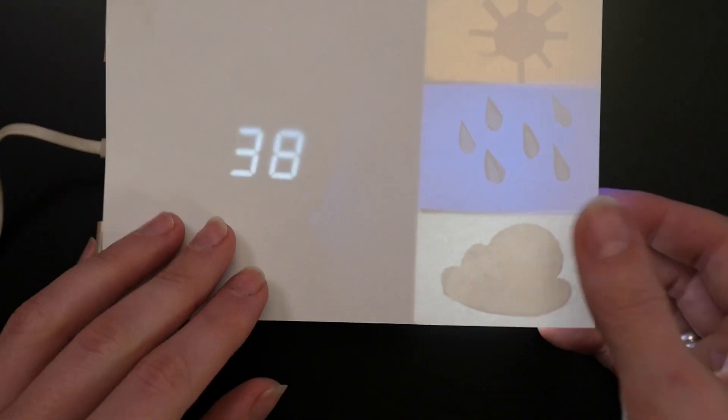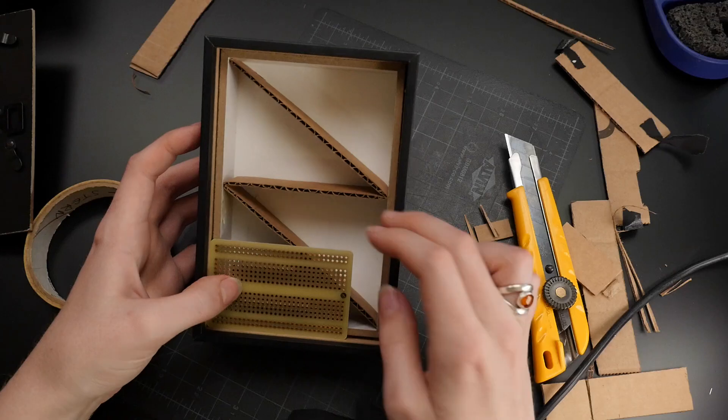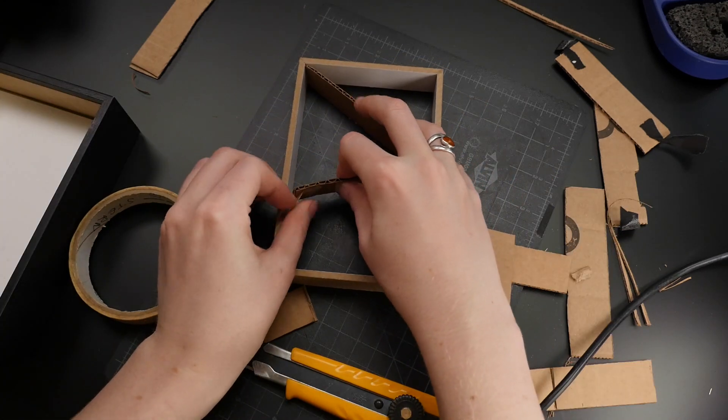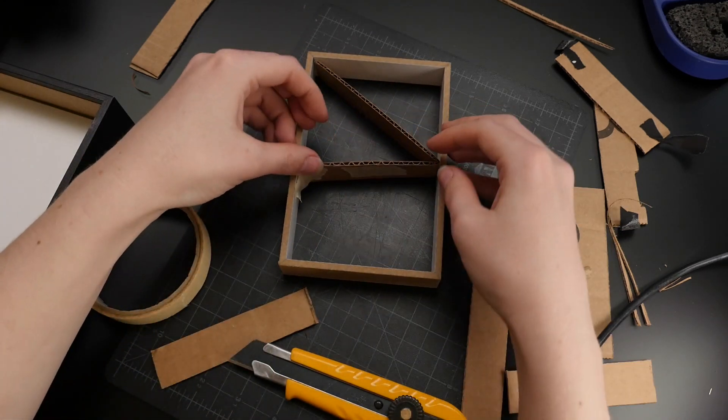I experimented with different weather condition displays, but settled on this triangular design, with one each for sun, clouds, and precipitation. I just used pieces of cardboard to block off the three areas.